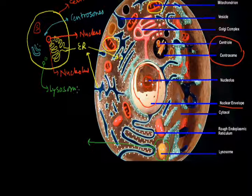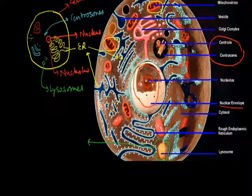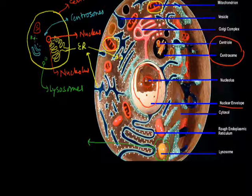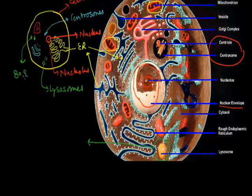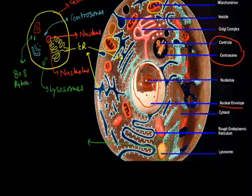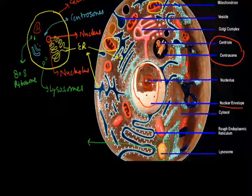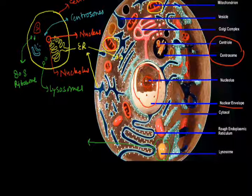Ribosomes are also present in the animal cell. In the eukaryotic animal cell, they are 80S ribosomes. They are responsible for protein synthesis in the cell, and they are present in both plant cells and animal cells.